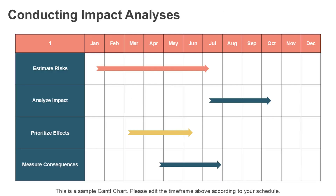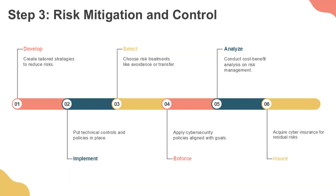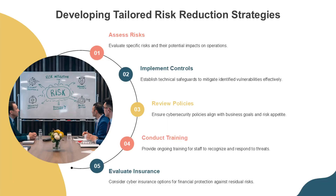Risk assessment transforms abstract threats into measurable business concerns, allowing security teams to focus resources where they'll have the most significant protective effect. This step often leverages frameworks like NIST SP-830, which provides structured guidance for federal information systems, but serves as a valuable model for private organizations as well.